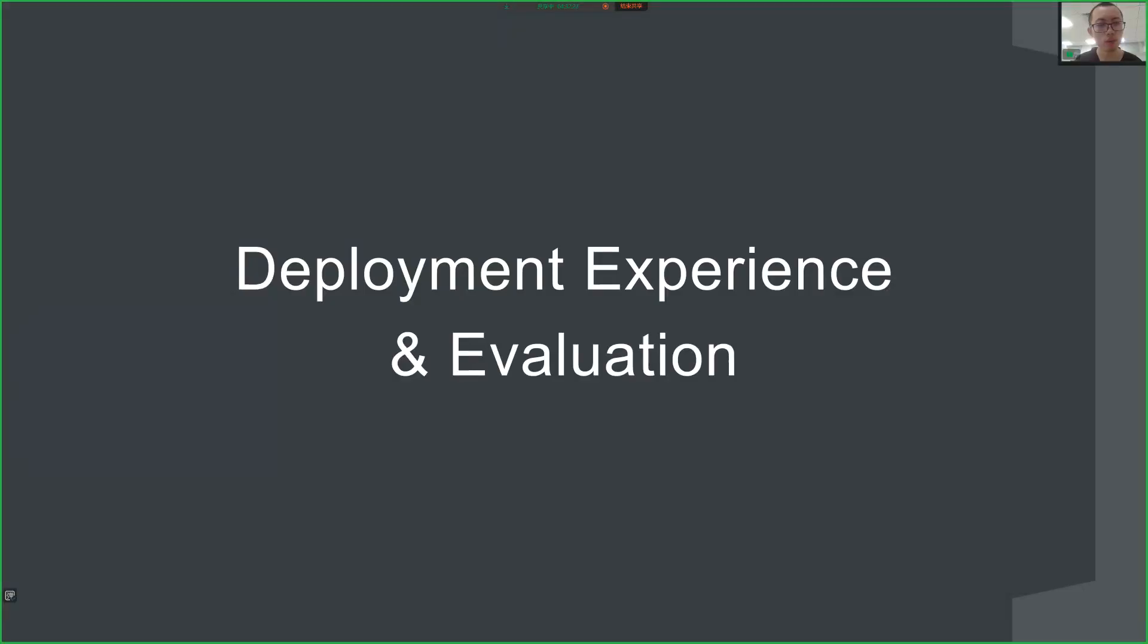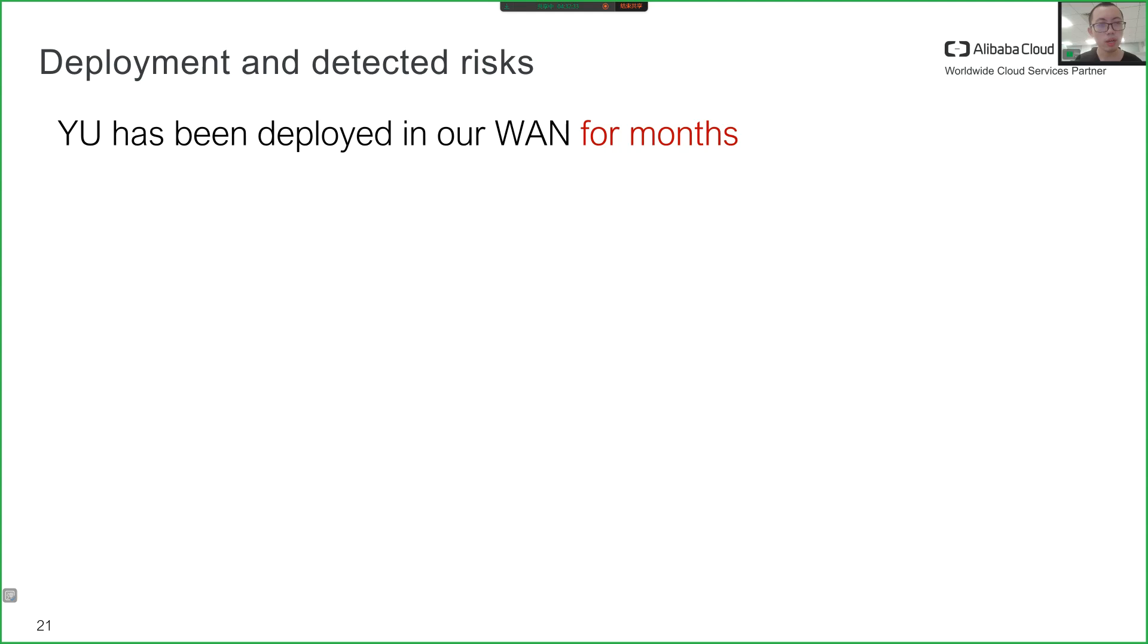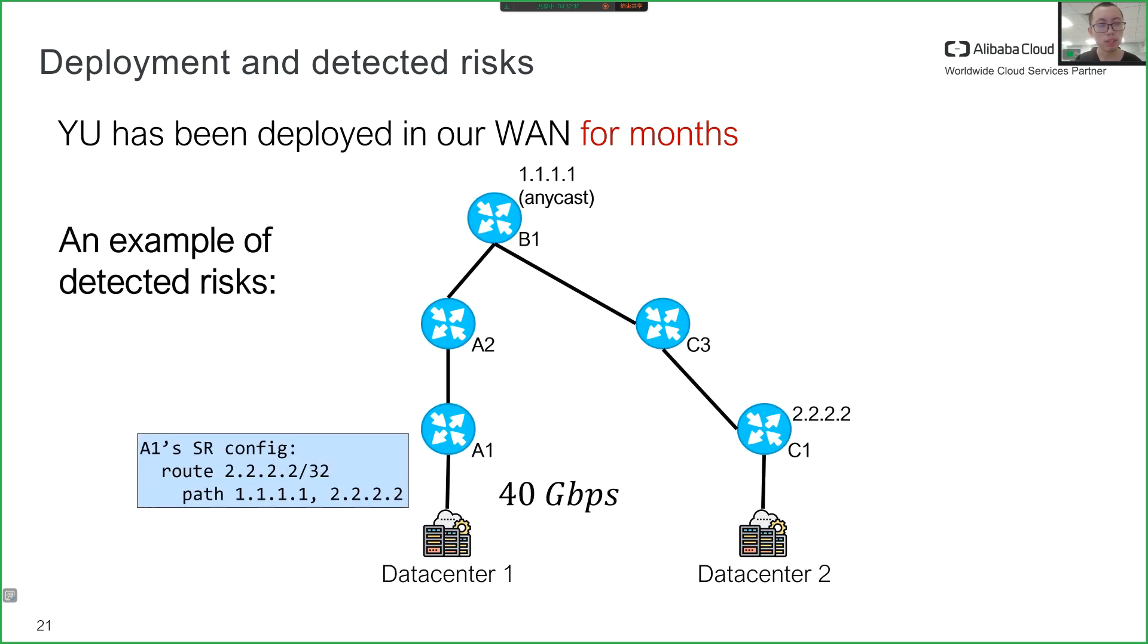The next part of my talk is a practical case study and performance evaluation of Yu. Yu has been deployed in WAN for months and has detected some real risks. Here is an example. DCSYN1 sends traffic to DCSYN2. Our operators configured SR tunnels to force forward traffic from DCSYN1 to the anycast IP 1.1.1.1, and then from the anycast IP to DCSYN2.